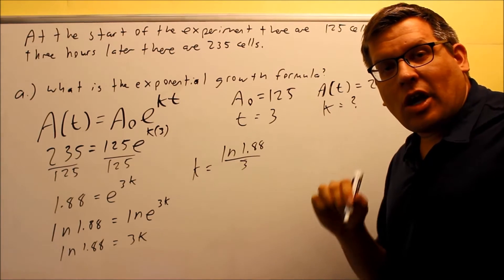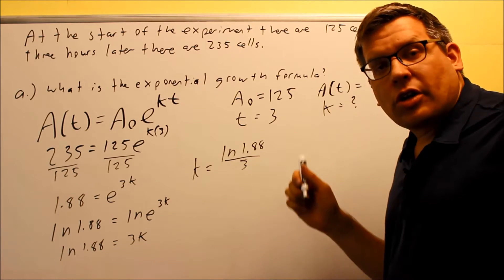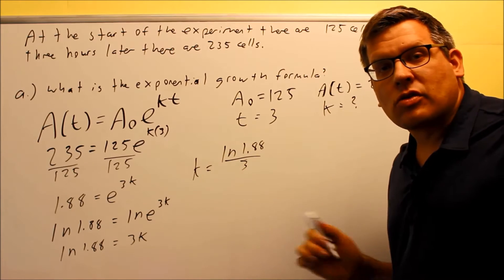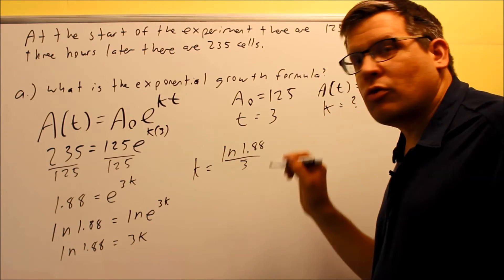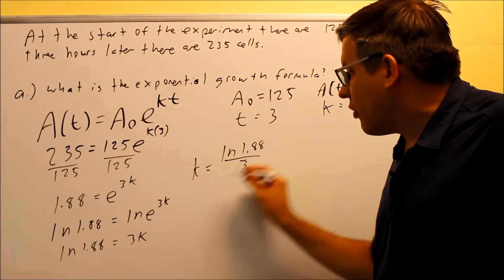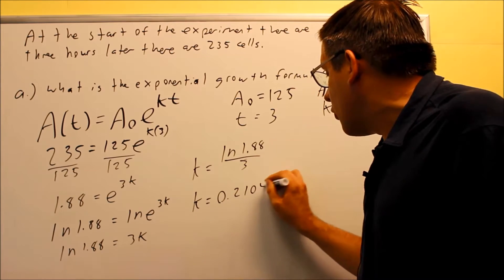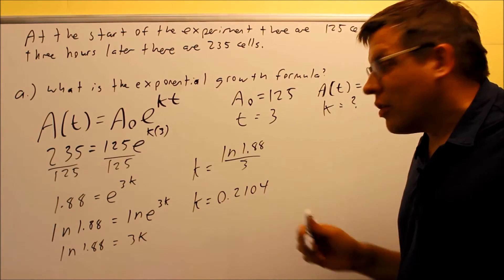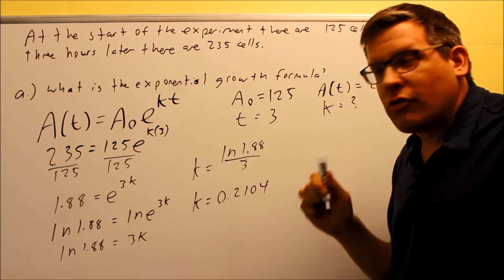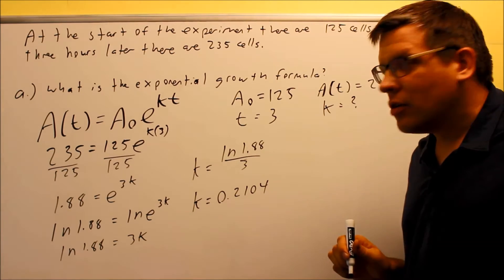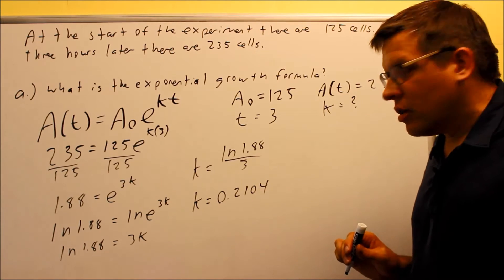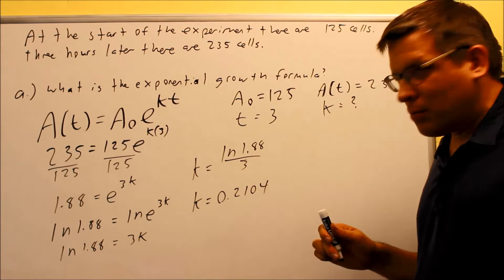For my class on the exams, you can just round your k value to 4 places. So that's what I'm going to do for all the examples in these videos. Four places would be enough decimals to be accurate enough for the problem. So if I do that to 4 places, 0.2104, that's what you should get for the k value. That's going to be your growth constant. We know we have growth because it starts from 125 and grows to 235. So we should get a positive number for your k value. Now we're not done yet because it asks for what's the exponential growth formula. This is not a formula. This is just a constant.